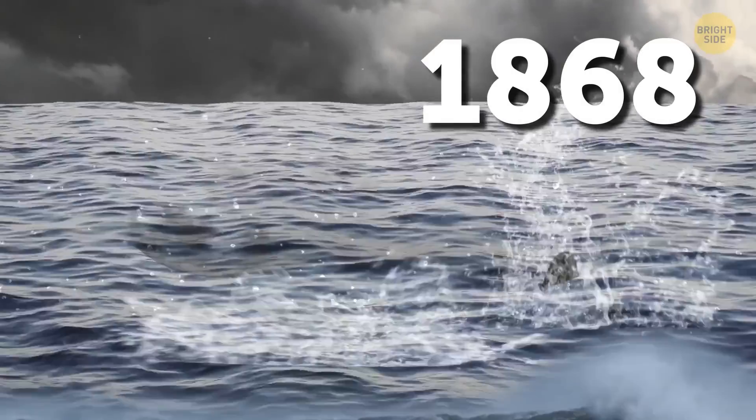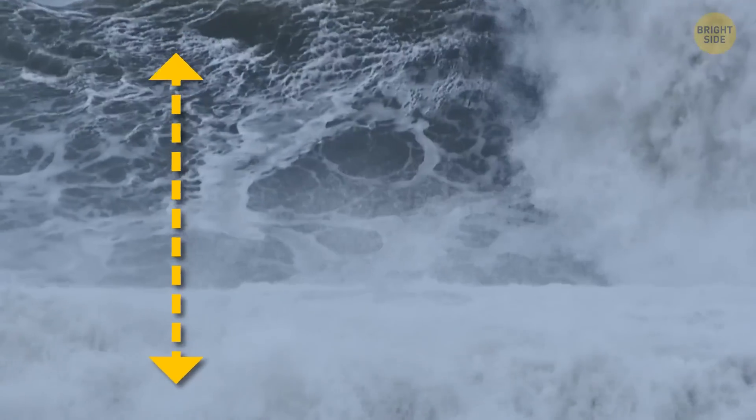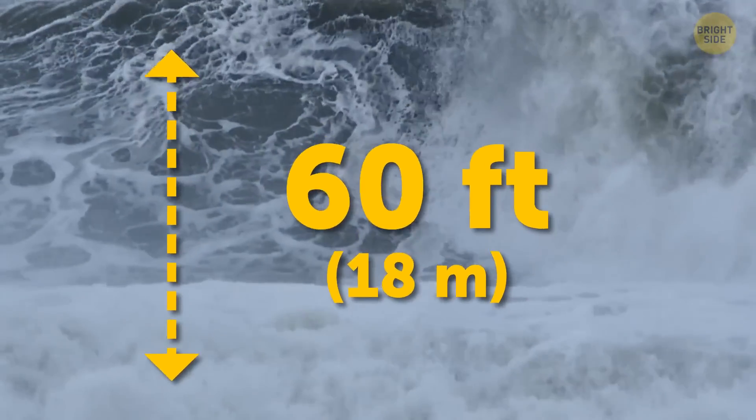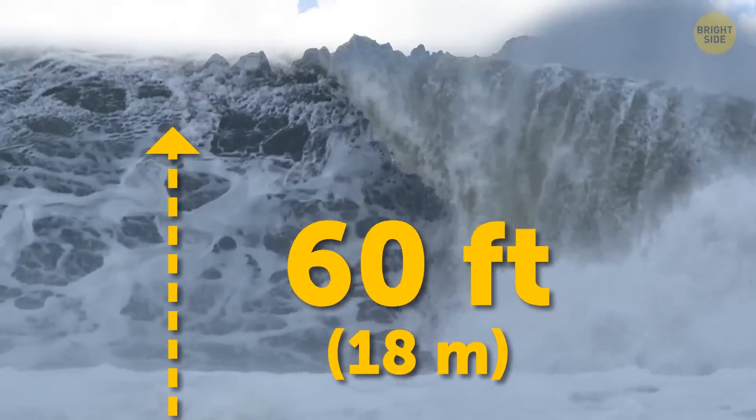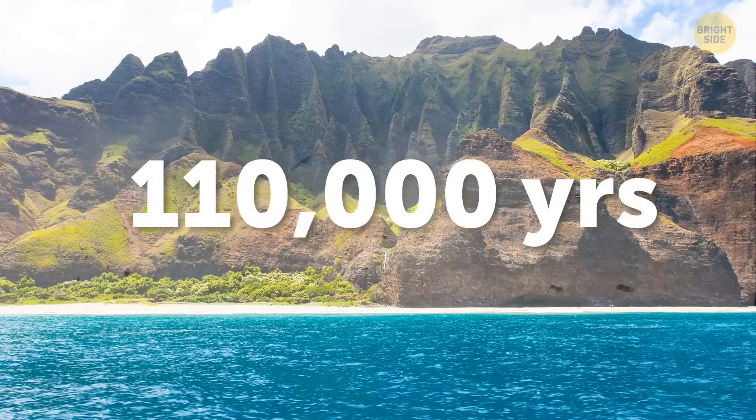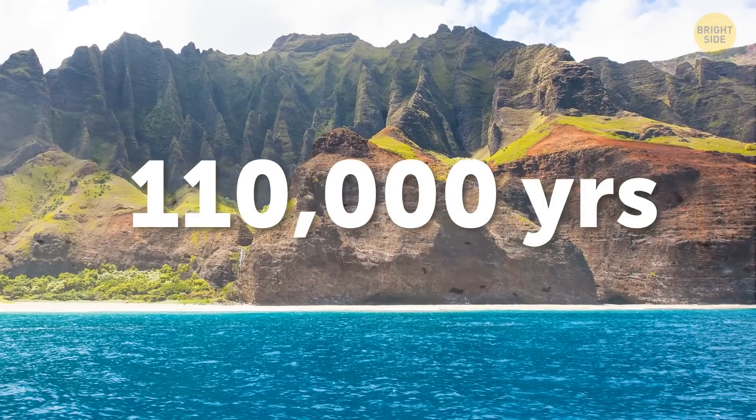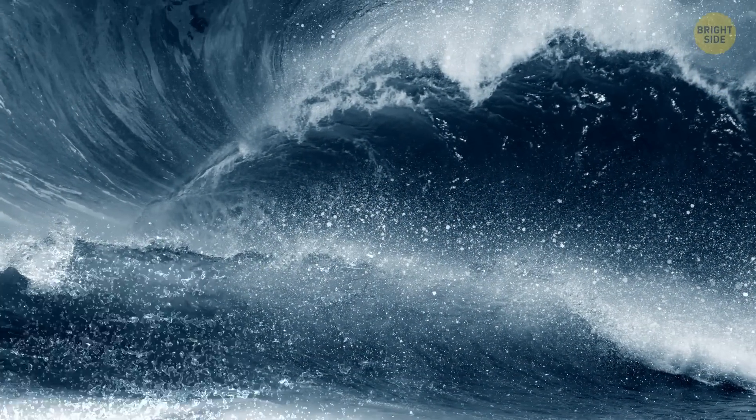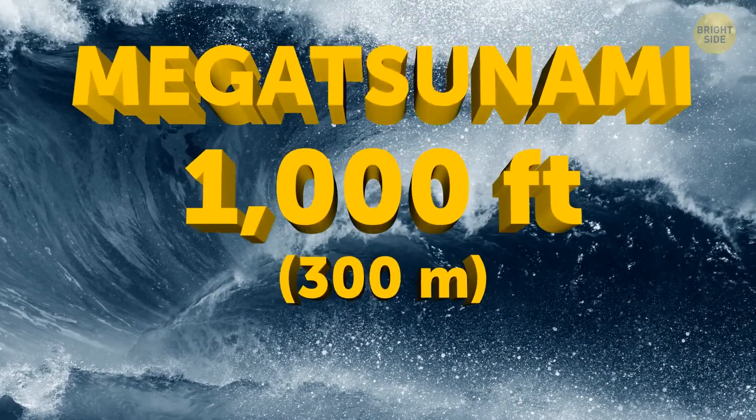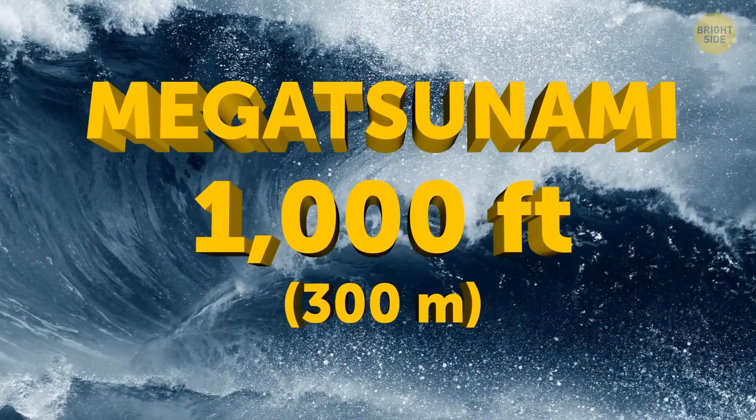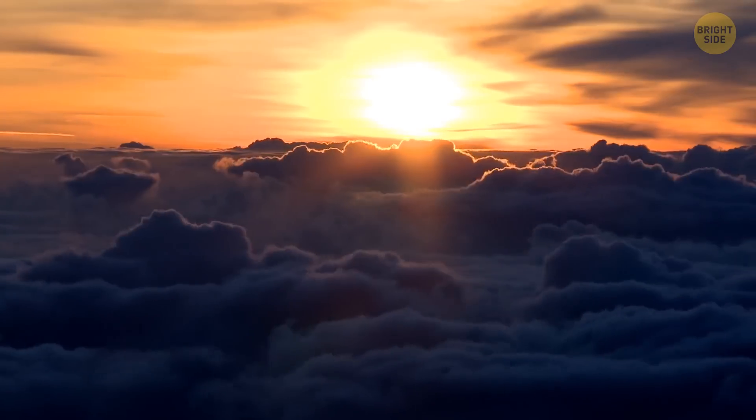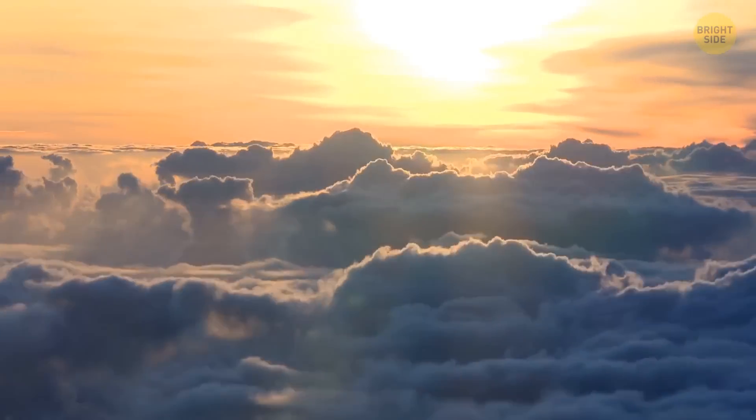In 1868, the shift of this slump caused a tidal wave rising as tall as 60 feet. But what's most troubling is that some 110,000 years ago, a landslide here led to one of the most powerful earthquakes ever, which in turn led to a mega-tsunami of over a thousand feet in height.